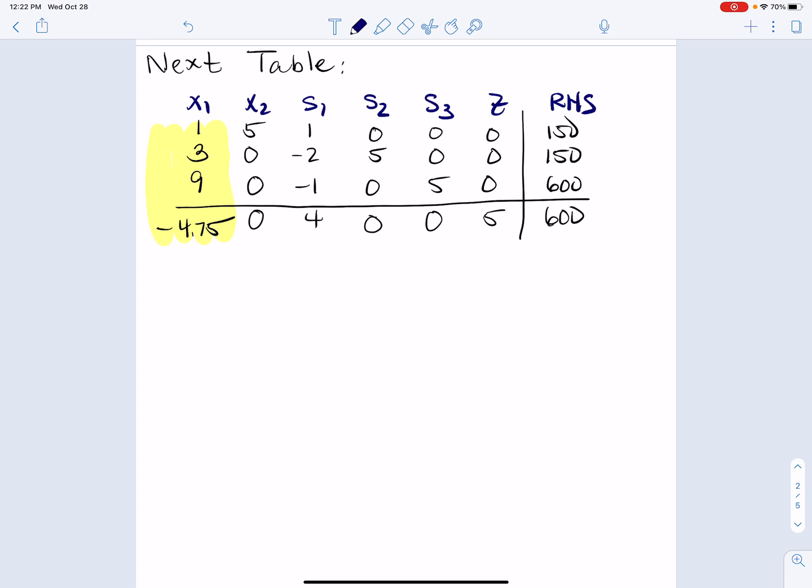Now, this one's going to get a little bit more tricky. We compare the ratios again on the first three lines to see which one is going to be our pivot. 150 over 1 is 150. 150 over 3 is 50. 600 over 9 is, well, that's 200 over 3, which is 66 and two-thirds. Bottom line is the 50 wins. So that's our pivot.